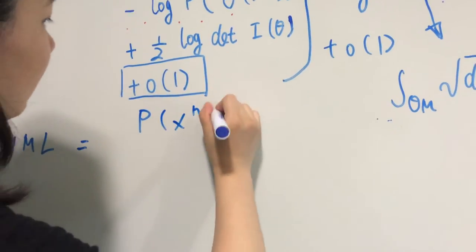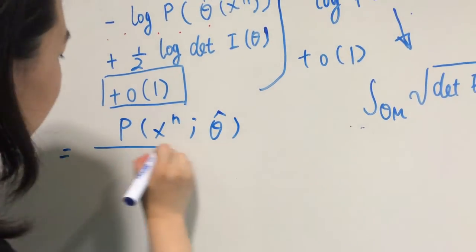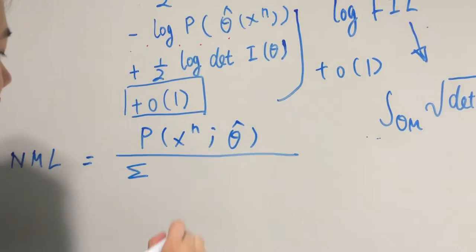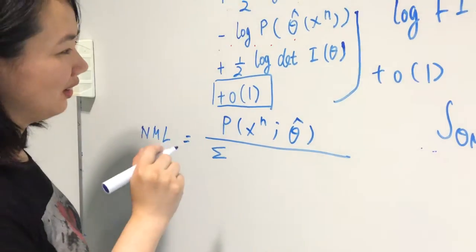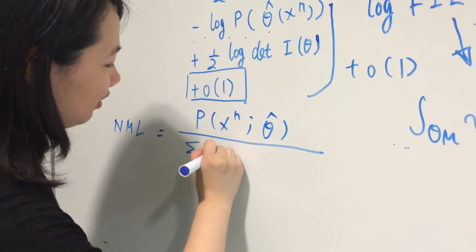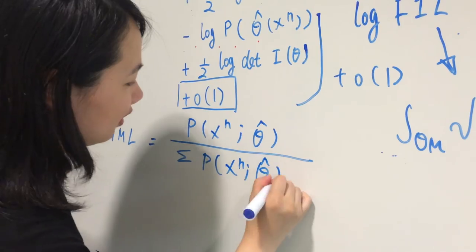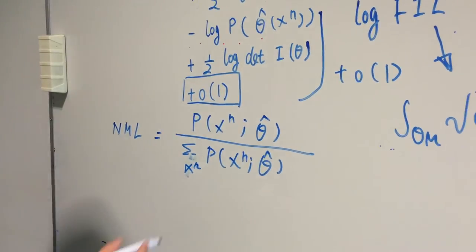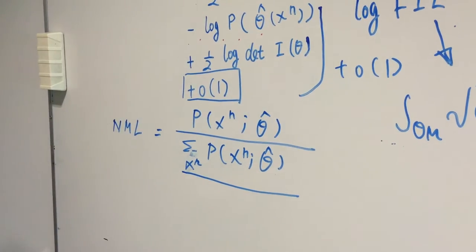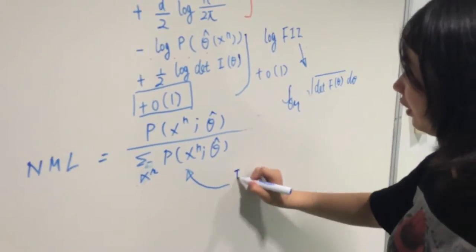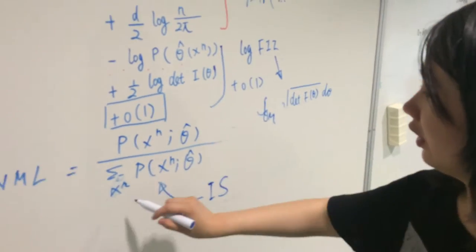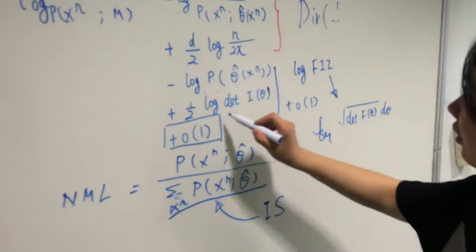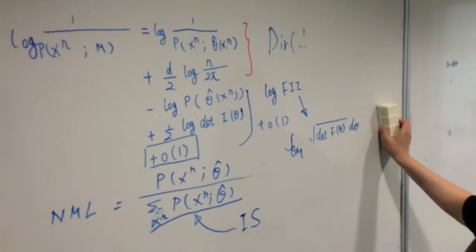It has the same asymptotic form as normalized maximum likelihood, which normalizes maximum likelihood over the sum of maximum likelihood of all possible sequences. Usually, we don't have close form solution for NML, but we can calculate the denominator by importance sampling.